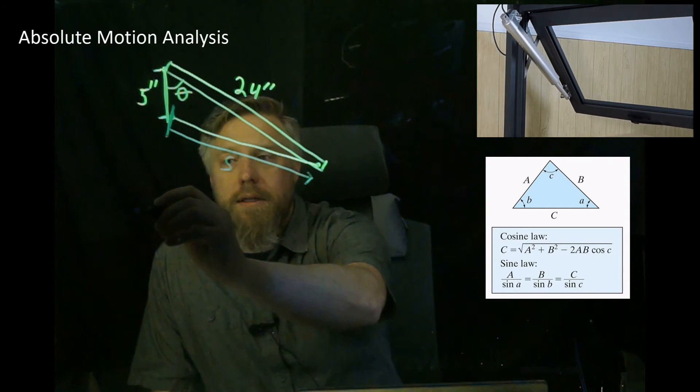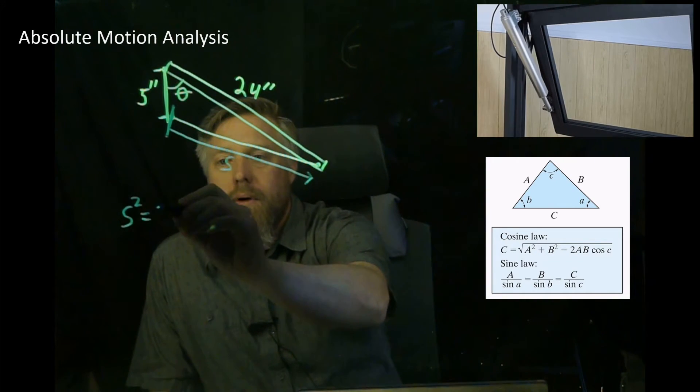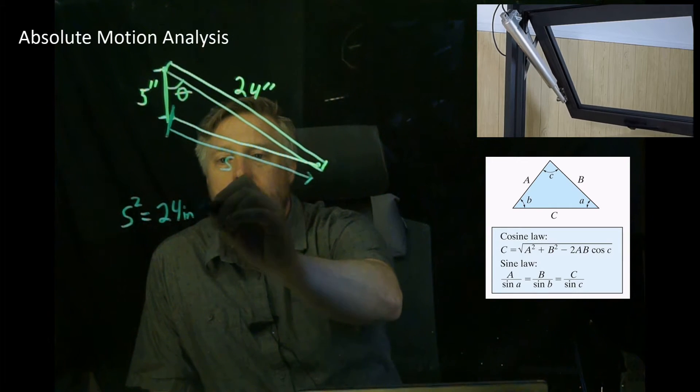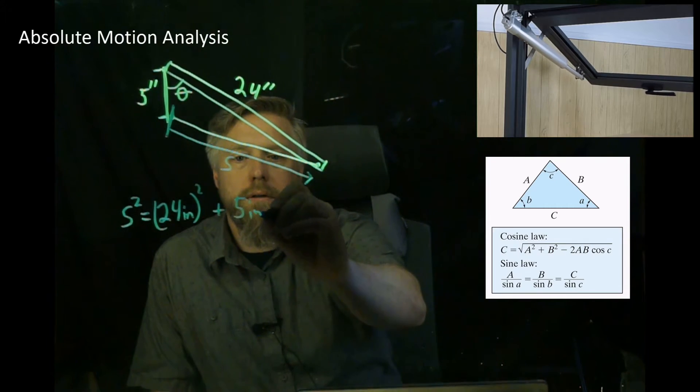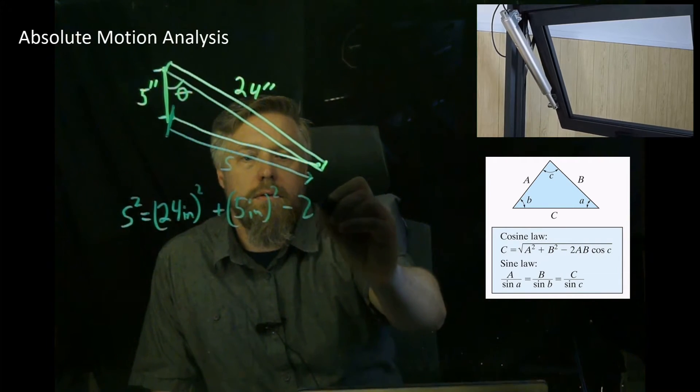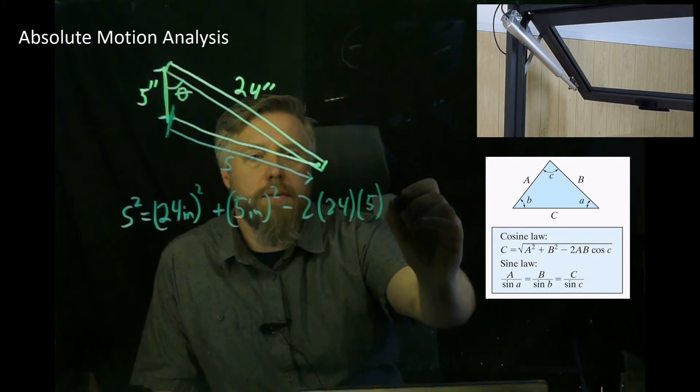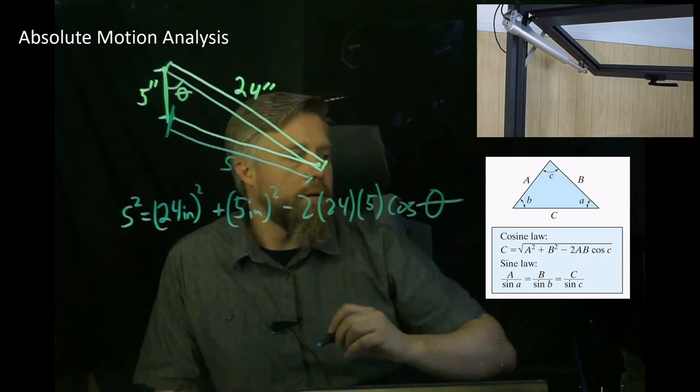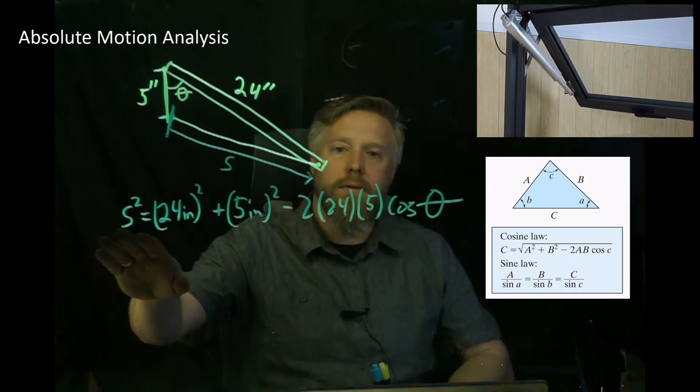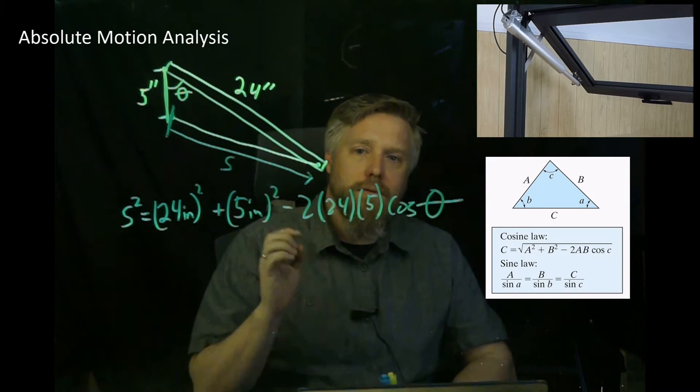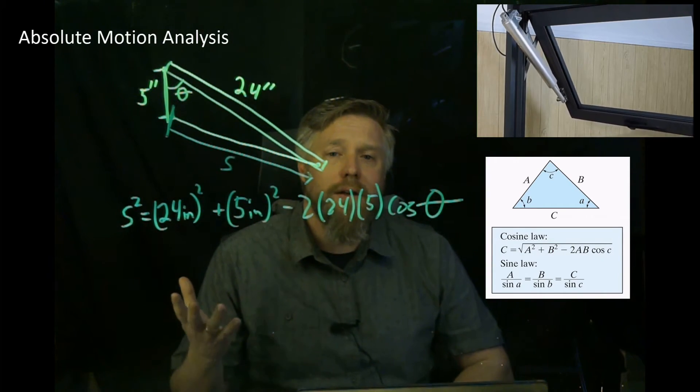That means we can write this out as c squared (which is our s) equals the other two sides squared: 24 inches squared plus 5 inches squared minus 2 times 24 inches times 5 inches times the cosine of that opposite angle, which is theta. And we have a relationship. This is a relationship between the length of our linear actuator and theta, which is really what we were looking for.